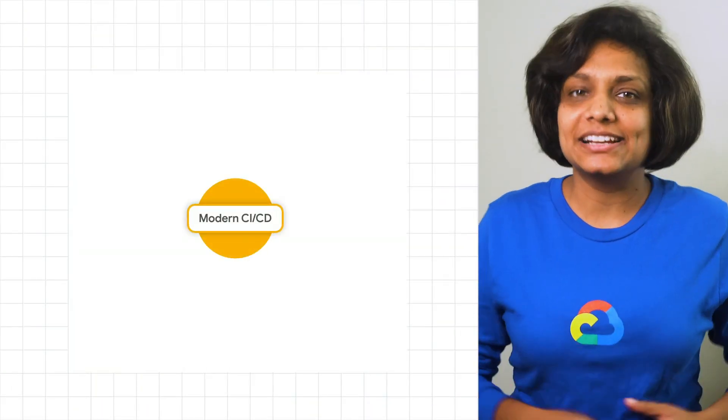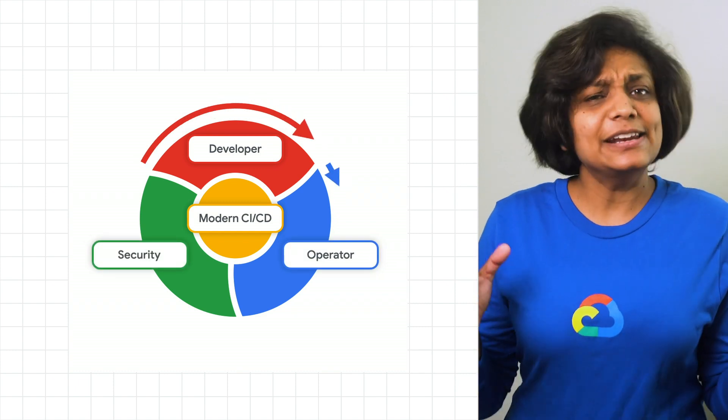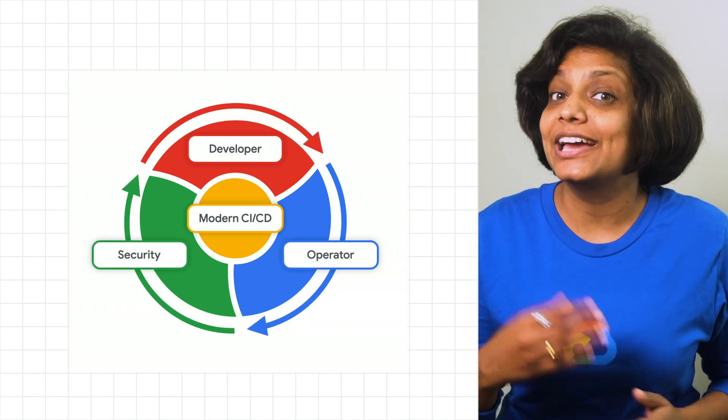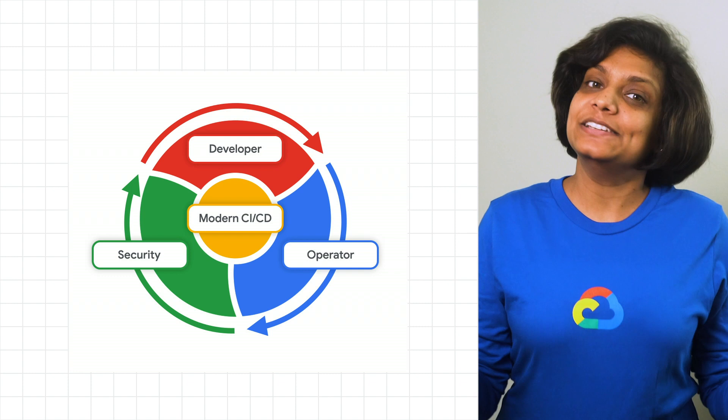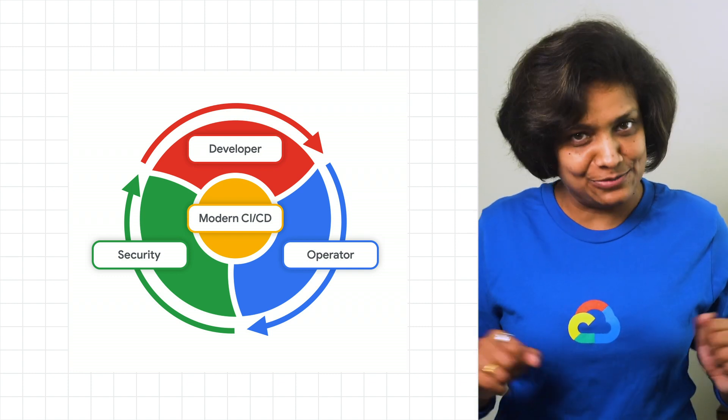Oftentimes, you will see operations teams getting bigger, security best practices tougher to enforce over more environments, and reliability issues making their way into production. So let's unwrap hybrid and multi-cloud continuous integration and continuous delivery — an approach that can help you accelerate your release cycles and increase your software's reliability across all your environments.